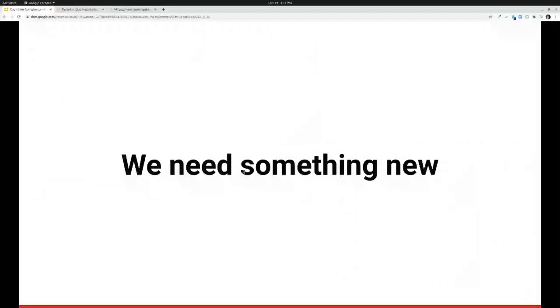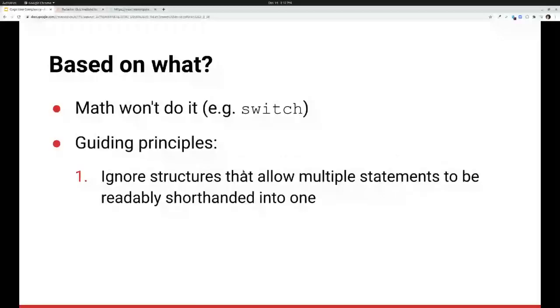What do we base it on, though? Because math won't work. Math gives us incrementing for each case in a switch statement. So after thinking about this, talking about it for several months, we came up with some guiding principles. The first guiding principle is to ignore structures that allow multiple statements to be readably shorthanded into one. What's behind this is the old saw that if you can measure it, you can improve it. So we were painfully aware that if we measured it, someone would think that it should be improved. And that anything we incremented for was going to be a candidate for being factored out. And so what we didn't want to do was incent the wrong behavior.